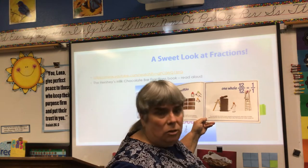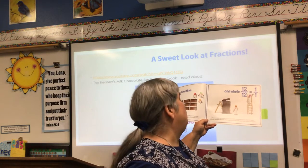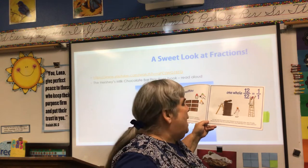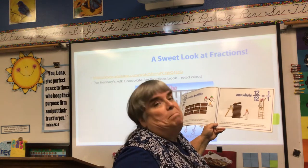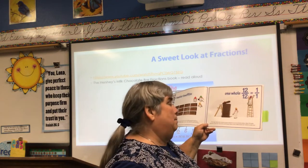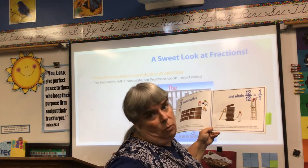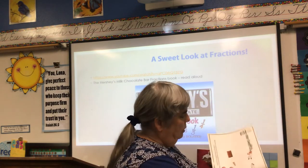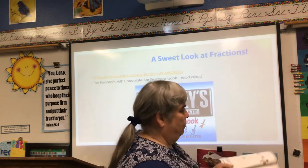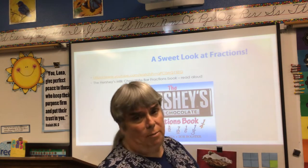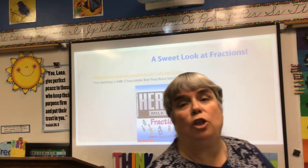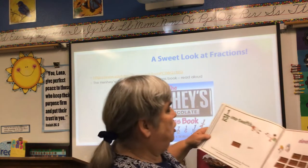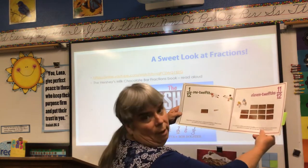You can stack the 12 equal sections on top of each other. It looks different, but any way you arrange them, they still equal 1 whole candy bar. Yesterday, if you remember in our lesson, we learned about unit fractions. So here's a unit fraction: 1 twelfth.